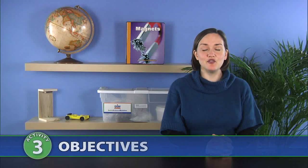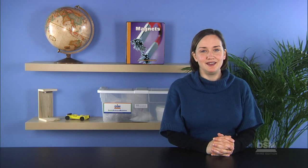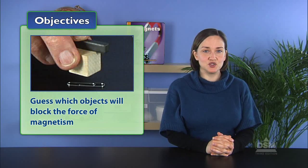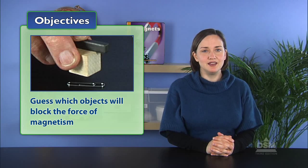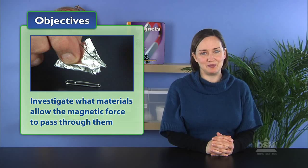In Activity 3, Can the Force Go Through It?, students discover that a magnetic force is invisible and can travel through materials. Students then guess which objects will block the force of magnetism and finally investigate which materials allow the magnetic force to pass through them.